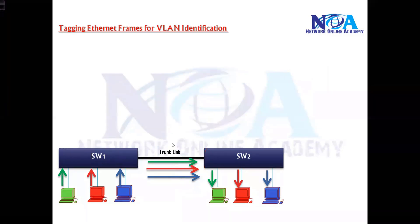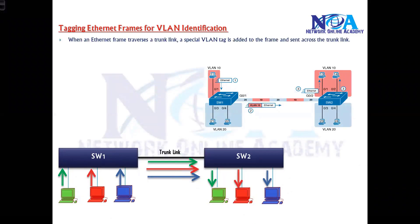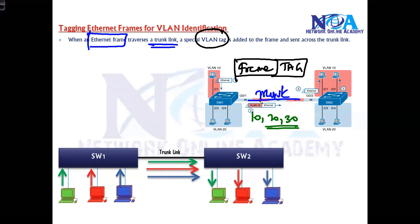That is the question, and to overcome this issue we have something called the tagging process. On trunk links, we have a tagging process. Whenever an Ethernet frame is moving over the trunk link — which is carrying VLAN 10, VLAN 20, and VLAN 30 traffic — it is going to carry some additional tag.